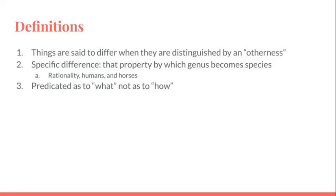And then the last part of the definition, this is important, is that it is predicated as to what a thing is rather than how it is. This is part of a thing's essence. This is not something that the being could exist without. It has to have this to be what it is.